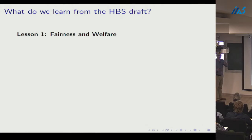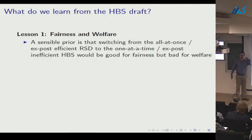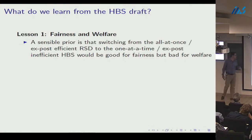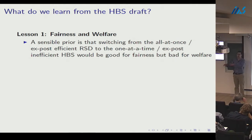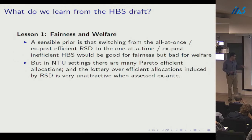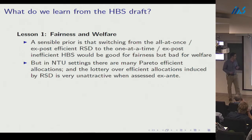There are a few lessons to take for the new mechanism. First, on fairness and welfare: the sensible prior was that switching from ex post efficient random serial dictatorship to the ex post Pareto inefficient HBS draft would be good for fairness but bad for welfare. But in non-transferable utility settings, ex post Pareto efficiency is a very weak property, and the lottery over Pareto efficient allocations induced by random serial dictatorship is very unattractive ex ante.